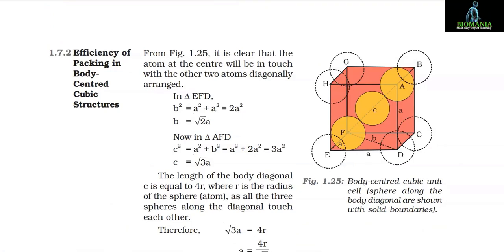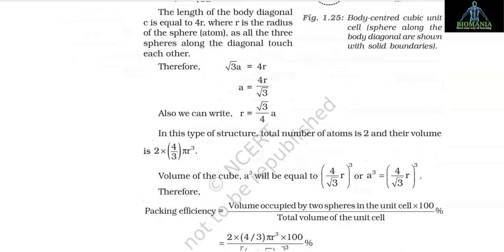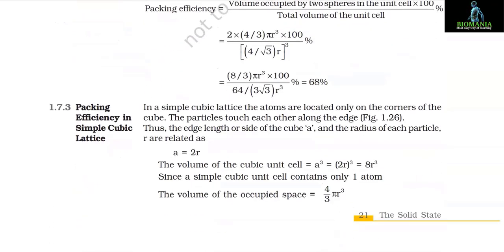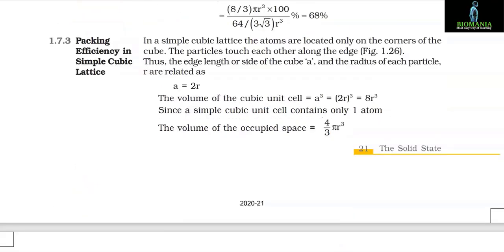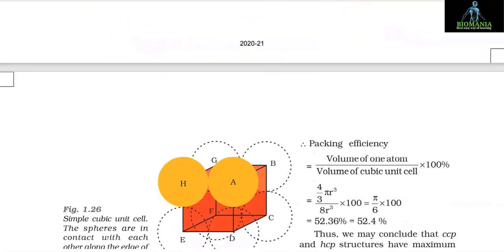1.7.3 Packing Efficiency in Simple Cubic Lattice. In a simple cubic lattice, atoms are located only at the corners of the cube. The particles touch each other along the edge, so the edge length a and radius r are related as a = 2r.